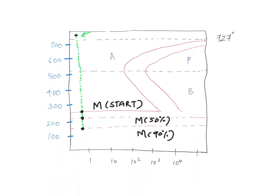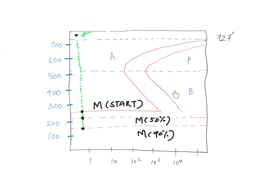Here you can see a typical isothermal transformation diagram. You have time on the x-axis, then temperature on the y-axis. This is 727 degrees Celsius — this particular line corresponds to that temperature. Above it, the austenite phase is stable. Now as you bring it down — suddenly cool it — you will get martensite.